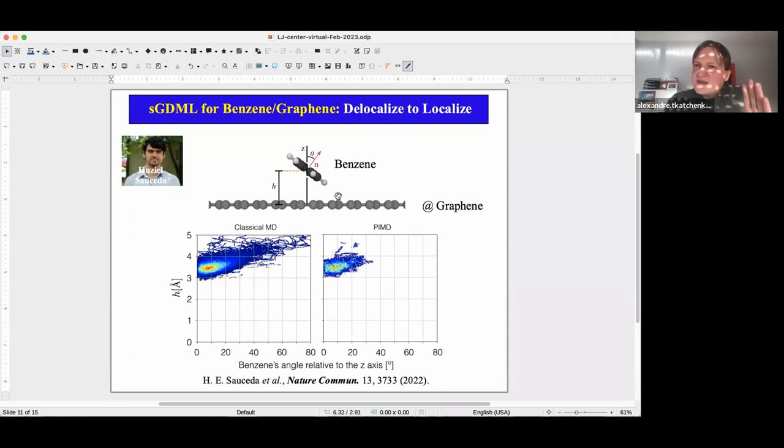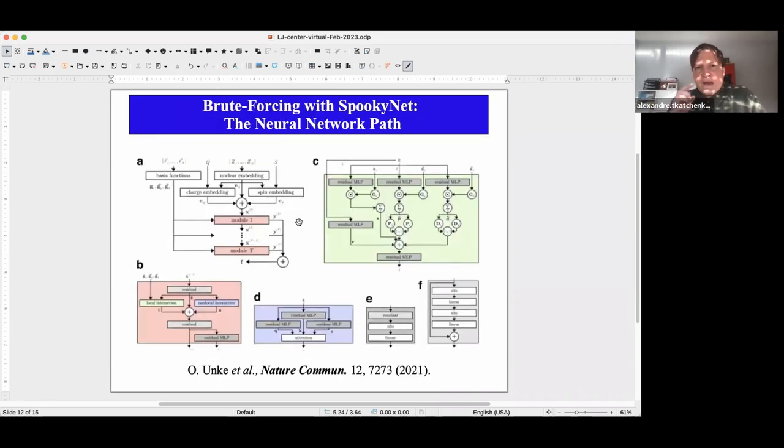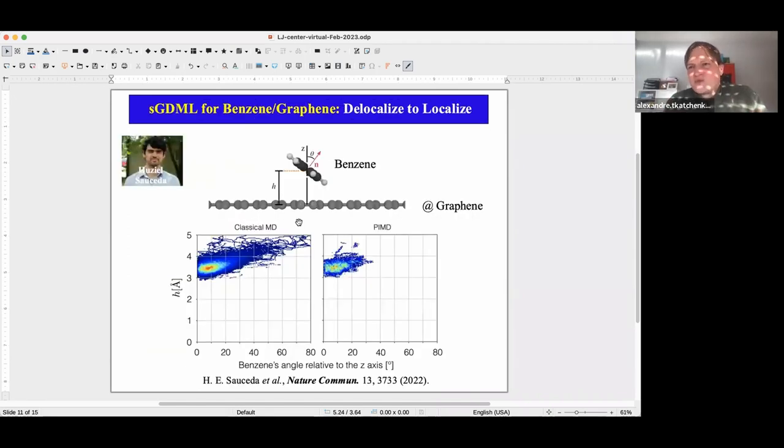So you can now see by employing the state-of-the-art machinery in force fields that you can obtain novel insights and enable simulations that were unheard of just a few years ago. Now, the important thing is that in this particular simulations, you need both local fluctuations and non-local fluctuations to be well-treated, right? In the molecule, in the graphene layer, but also between the molecule and graphene layer. And so this is a very challenging test system. Okay. Now, this was our first path towards large molecules. Now, this is not without problems.